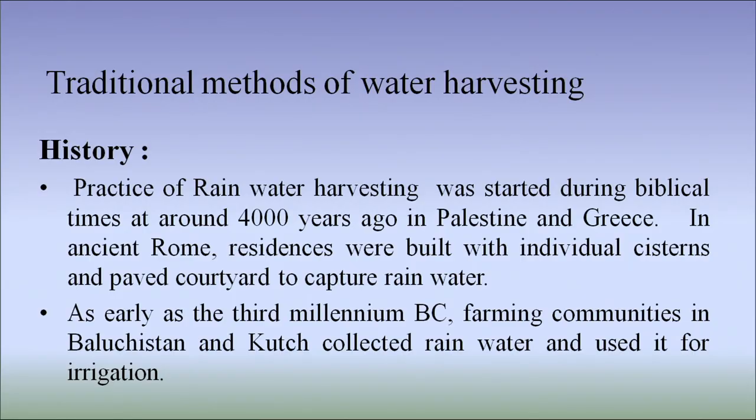We will now discuss traditional methods of water harvesting. Let us see the history first. The practice of rainwater harvesting was started during Biblical times, around 4000 years ago, in Palestine and Greece. In ancient Rome, residences were built with individual cisterns and paved courtyards to capture rainwater. As early as the 3rd millennium BC, farming communities in Baluchistan and Kutch collected rainwater and used it for irrigation.